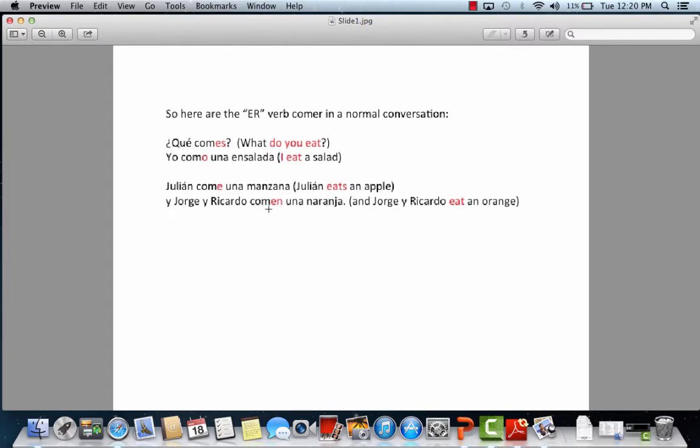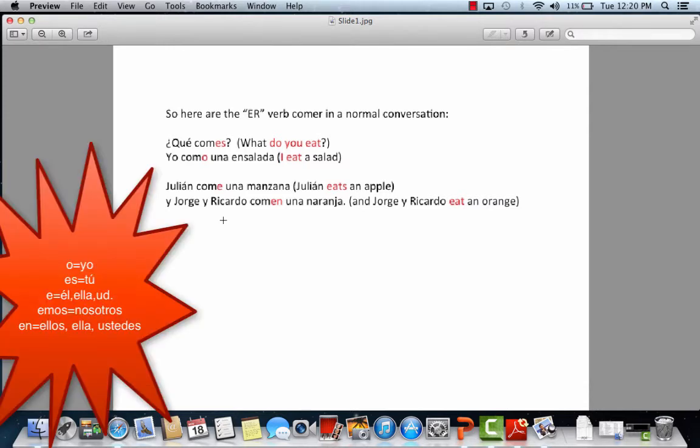So the endings are matching my subjects. To make it easy to understand, remember, the letter O equals I. Letters ES equals you. Letter E equals a he, or a she, or usted, which means you, formal. The letters Emos equals we. That means more than one person, and I, myself, included. And then finally, the letters EN equals you all, or they. In other words, more than one person, yourself not included.